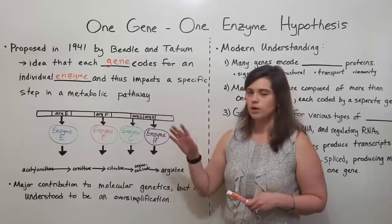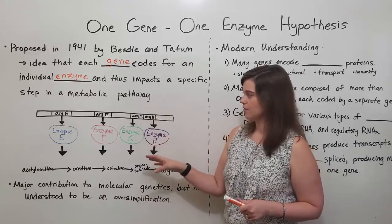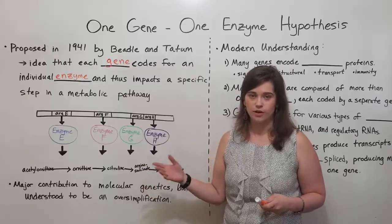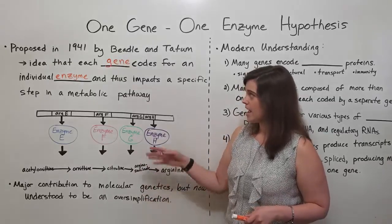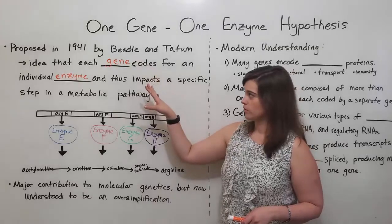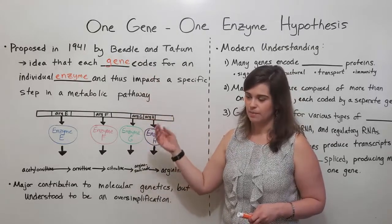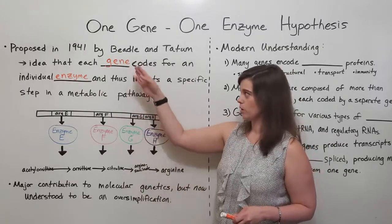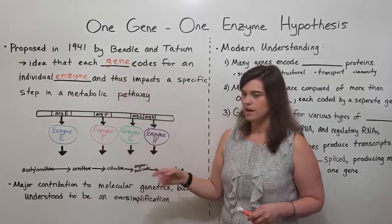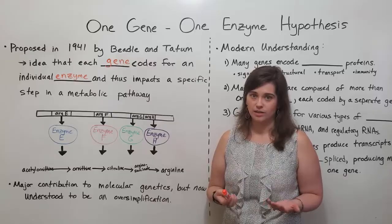They were correct in that these kinds of genes and metabolic pathways certainly do exist and are very important to cellular function. Their idea that one gene contributes to metabolic pathways through this one gene one enzyme interface was a major contribution to the field of early molecular genetics.